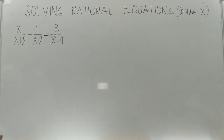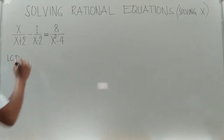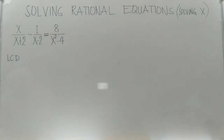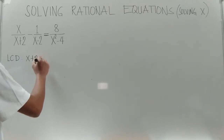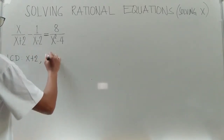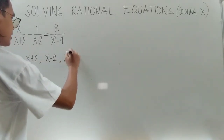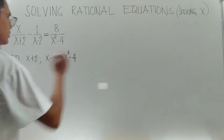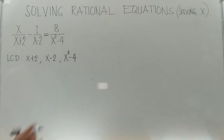As a fundamental step, let us identify your LCD. To identify your LCD, let us first look at your denominators. The denominators are x plus 2, then we have x minus 2, then we have x squared minus 4. So we have three different denominators.